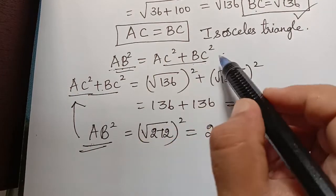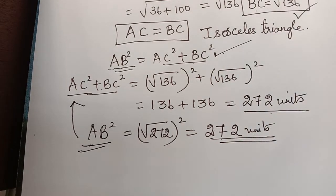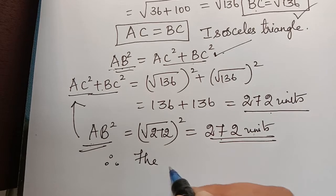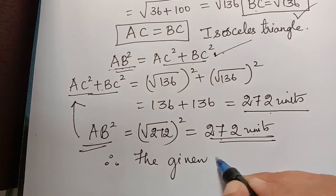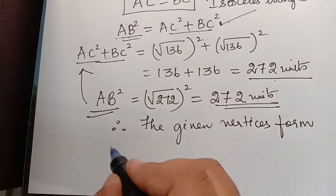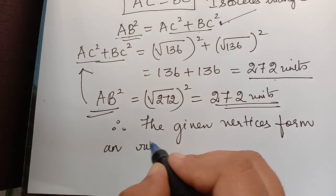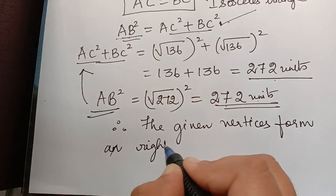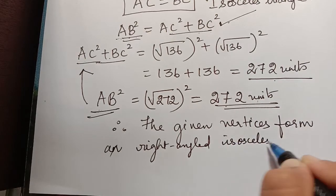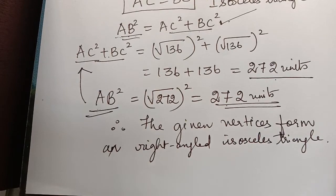Therefore, the given vertices form a right-angled isosceles triangle. Hope you have understood this problem. Thank you.